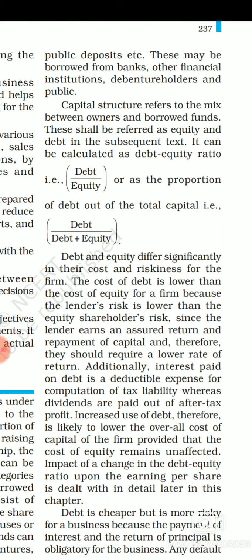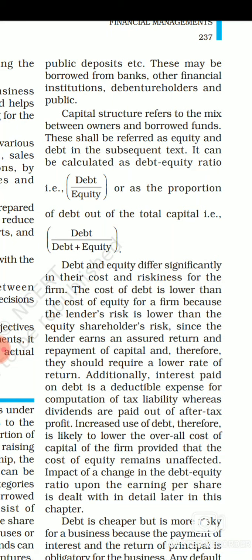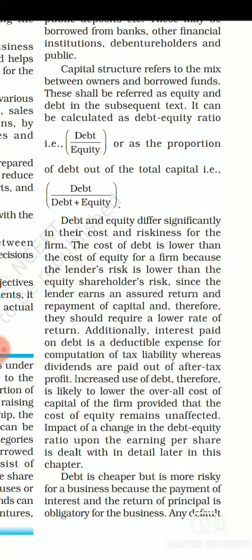Capital structure basically means studying about the mix: how much investment has been done from the owner's side and how much money has been arranged from outside as a form of loan or borrowings. Studying that mix of structure is called capital structure. The definition is: capital structure refers to the mix between owner's fund and borrowed fund. This is also referred to as equity and debt — we can also call this the debt-equity ratio.